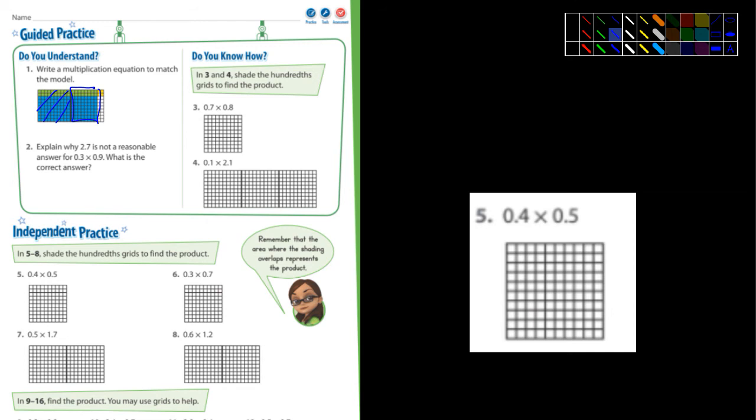And so that would be 1.8 if you were to count it. Be 180 squares that are blue. And then times 0.2, which would be this right here. And if you were to multiply those together, you'd get 0.36. Not worried about number two.